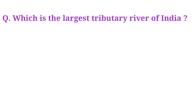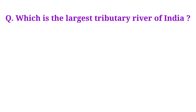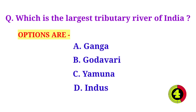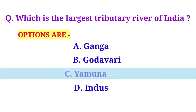Which is the largest tributary river of India? Option C, Yamuna, is the correct answer.